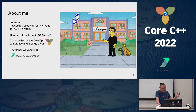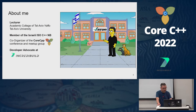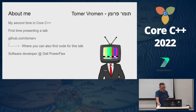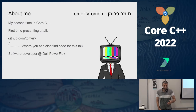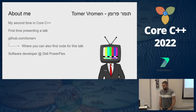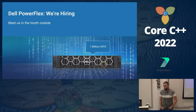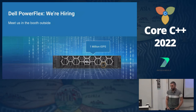A few words about myself: Amir Kirsch. I'm a lecturer at the Academic College of Tel Aviv-Yafo and Tel Aviv University, a member of the Israeli ISO C++ national body, co-organizer of this conference, and a developer advocate at IncrediBuild — which does build acceleration. If you are suffering from slow builds, come talk with me or visit IncrediBuild at the booth. I'm Tomer, a C++ developer, first time presenting here, second time attending. I work at Dell, where we do very large-scale IOs — distributed storage, very stable — and we're hiring.